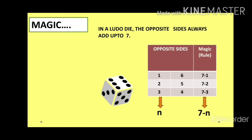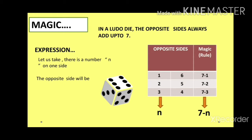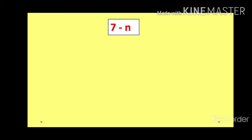Now n can be 1, 2, 3, 4, 5, 6 — anything. So according to that, we will have the corresponding opposite side. We can state it as an expression: let there be a number n on one side, so the opposite side will be 7 minus n. As we have seen, n is not fixed. So here, 7 minus n is called an algebraic expression.